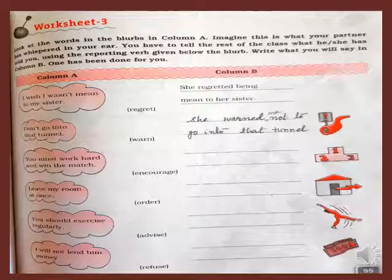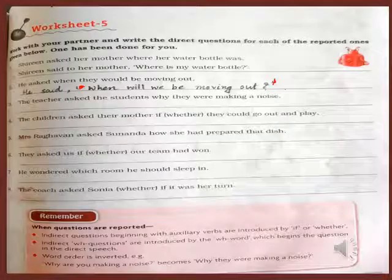In the same way, dear students, try to complete the remaining ones. Now in the next exercise, you have to change indirect speech into direct speech. 'Shireen asked her mother where her water bottle was.' So we can change it into: Shireen said to her mother, comma, inverted comma open, 'Where is my water bottle?' Question mark and inverted comma close.